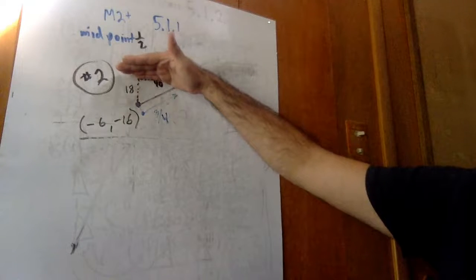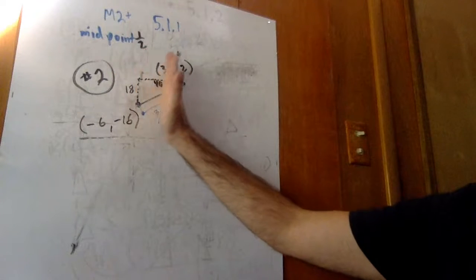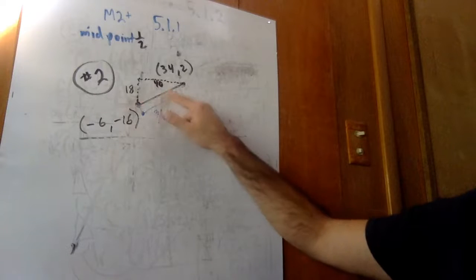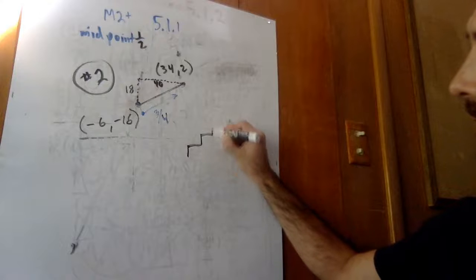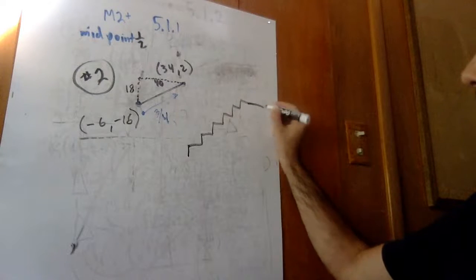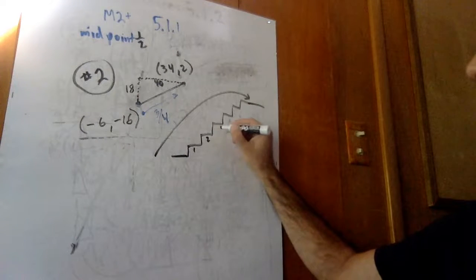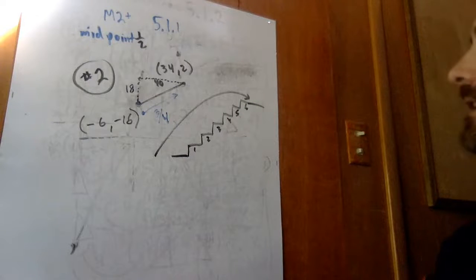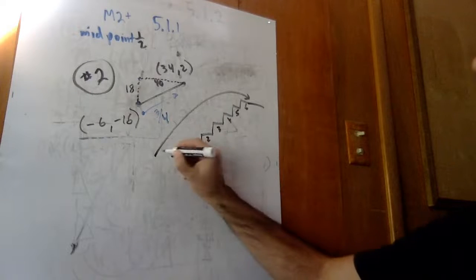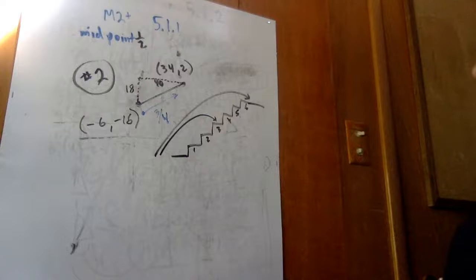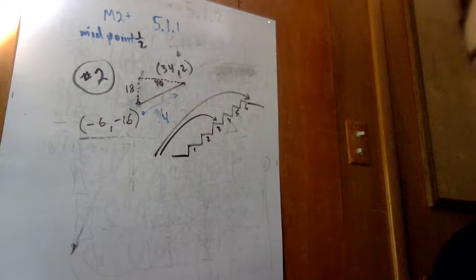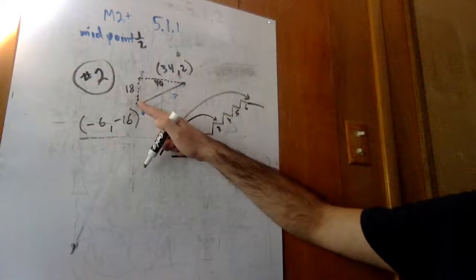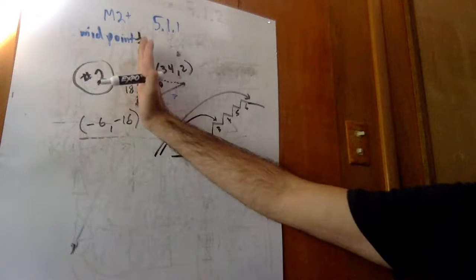From x = negative 6 to x = 34 is a distance of 40. To go from y = negative 16 up to y = 2 is 18. We need to find three-fourths of the way. Think of it like stairs: instead of going 100% of the way, we only go three-fourths of the way up and three-fourths of the way over. So three-fourths of 18 is 13.5, and three-fourths of 40 is 30. We need to go up 13.5 and over 30 from the starting point.